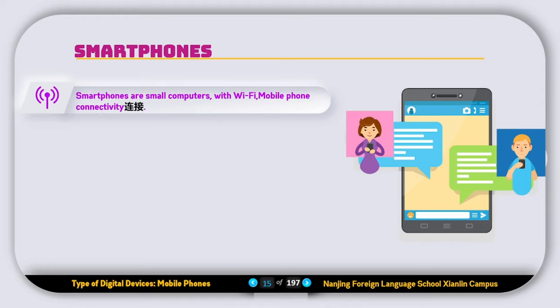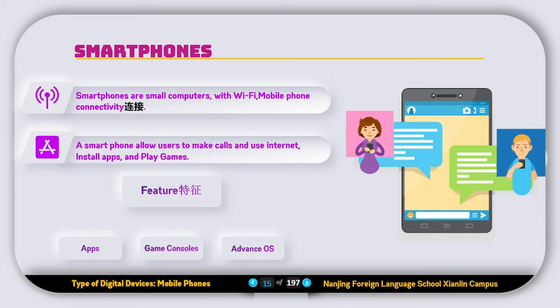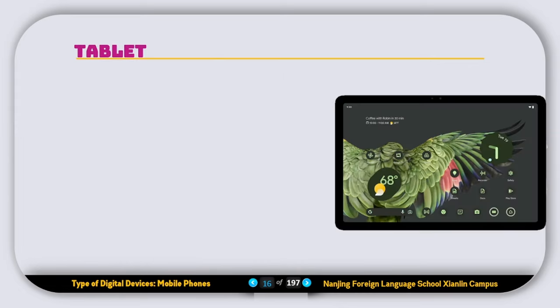Next we have smartphones. Smartphones are small computers with Wi-Fi and mobile phone connectivity. A smartphone allows users to make calls, use the internet, install apps, and play games. Features of a smartphone include the ability to install apps, use it as a game console, and it has a separate, advanced operating system.